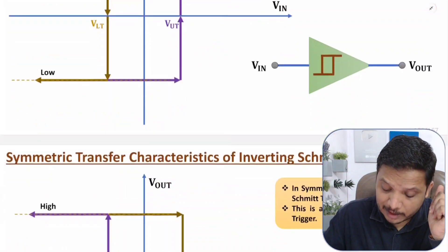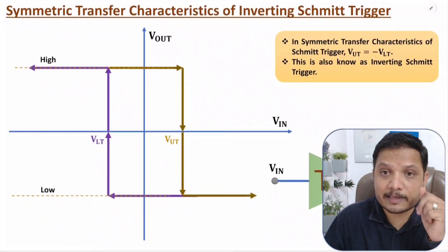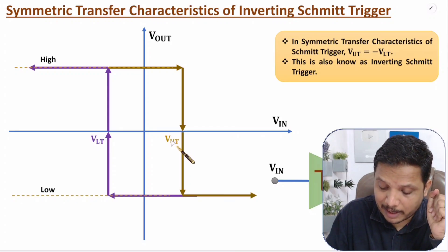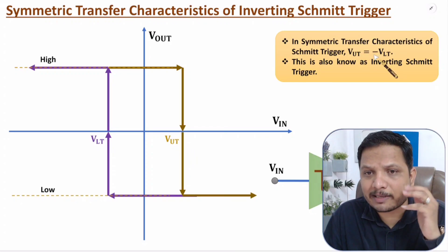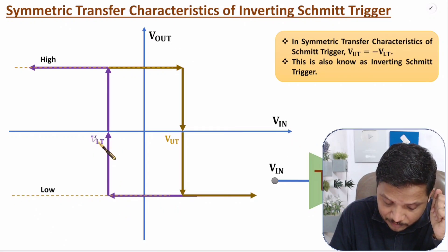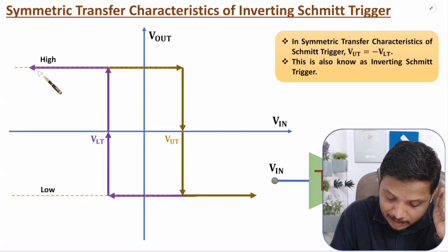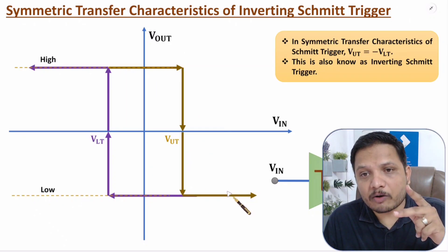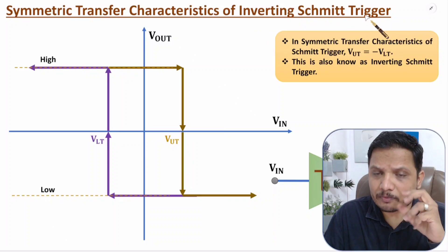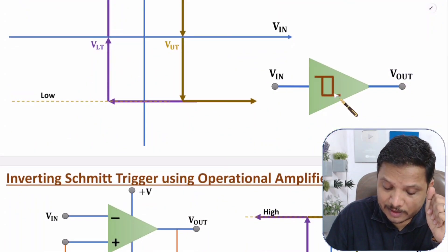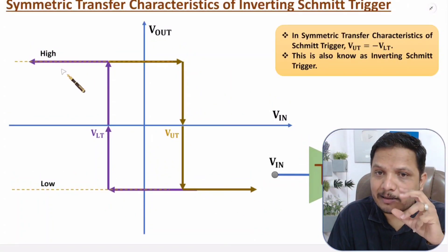For inverting Schmitt trigger, things are reversed. The symmetric transfer characteristic means VLT is the negative of VUT — same magnitude, opposite polarity. In inverting Schmitt trigger, if VIN goes lower than VLT, there is a transition from low to high; if VIN exceeds VUT, there is a transition from high to low. So the output is the inverse of the input — that is why it is the inverting Schmitt trigger. The symbol shows the same hysteresis shape.